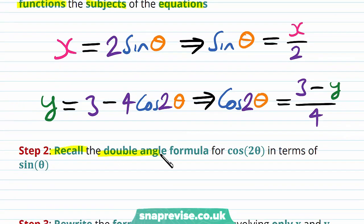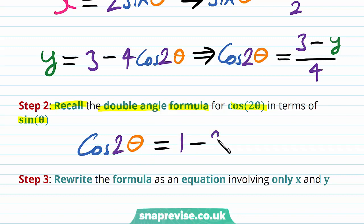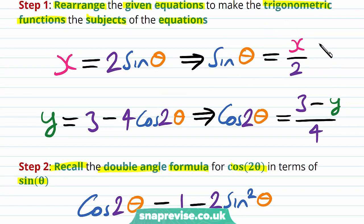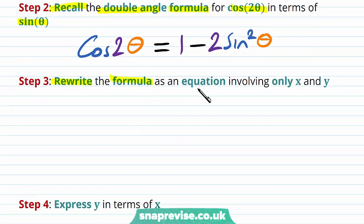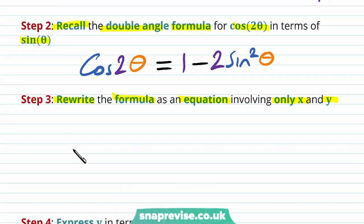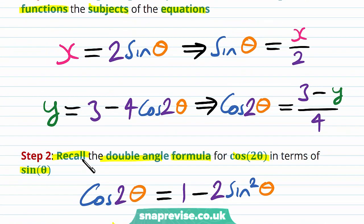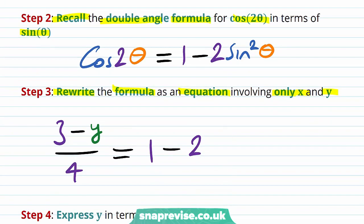Our second step is to recall the double angle formula for cos 2 theta in terms of sin theta only: cos of 2 theta equals 1 minus 2 sin squared theta. We chose this form because we have an equation for sin theta directly. We then rewrite, substituting cos 2 theta as 3 minus y over 4 on the left, and replacing sin theta with x over 2, giving x over 2 all squared on the right.